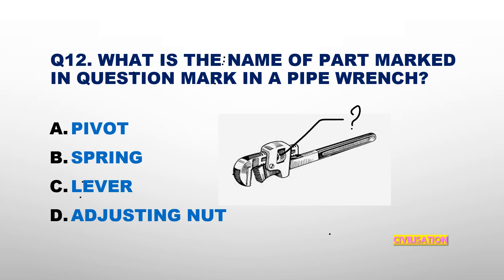Question number 12: What is the name of the part marked with a question mark in a pipe branch? Options: Pivot, Spring, Lever, or Adjusting Nut? The answer is Adjusting Nut.